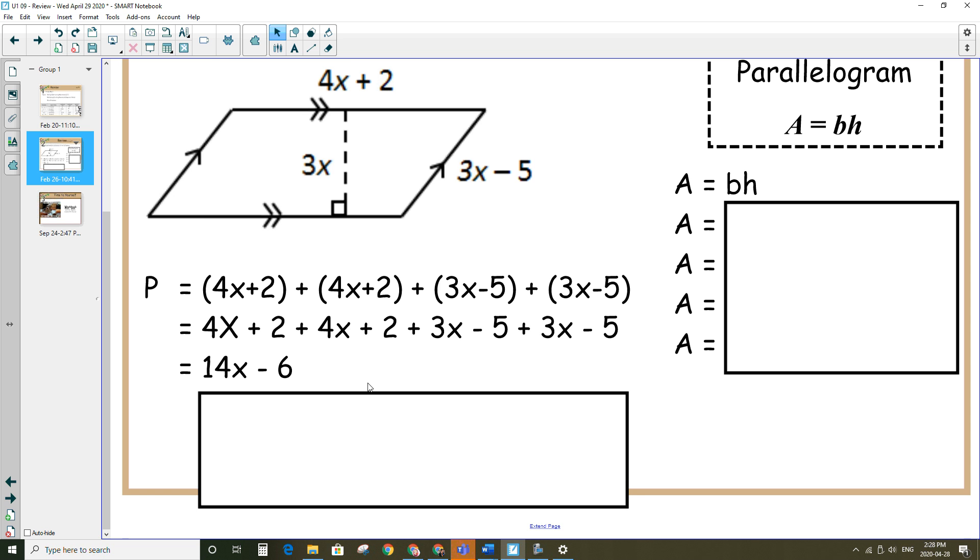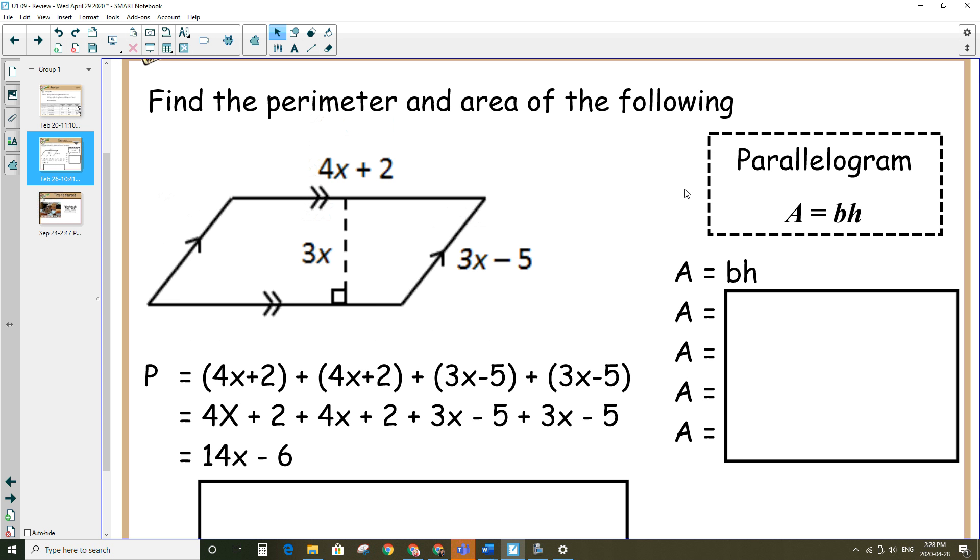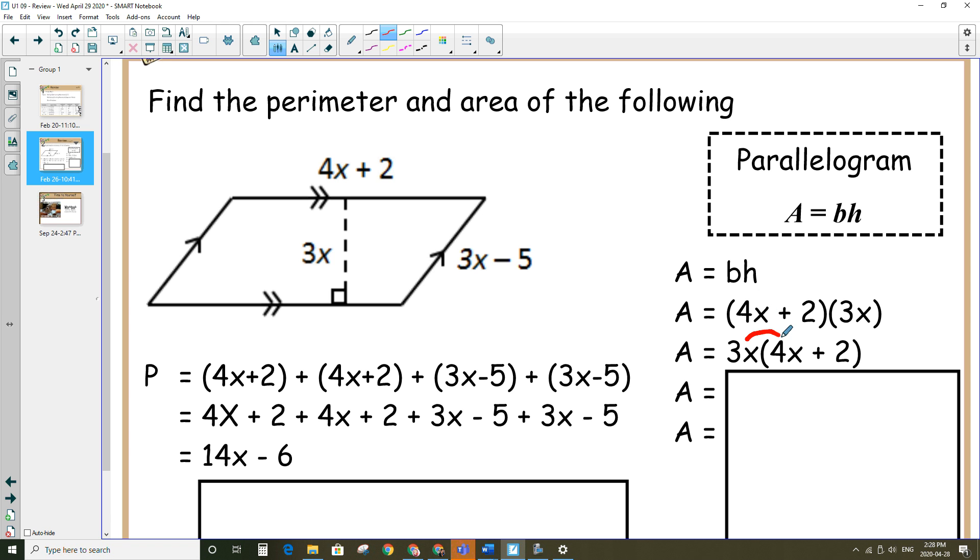For the area, the formula for a parallelogram is base times height. So the base of this shape would be 4x plus 2, and the height is represented by 3x. So I'm going to multiply 4x plus 2 by the 3x. And in this line here, I've just moved the 3x to the front, and I'm going to multiply the 3x by everything inside the brackets. So 3x multiplied by 4x, and 3x multiplied by 2. And then in the last line, it's 12x squared plus 6x.